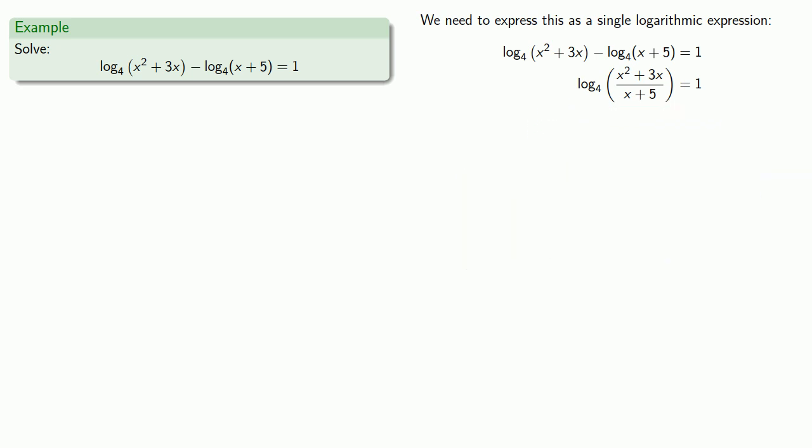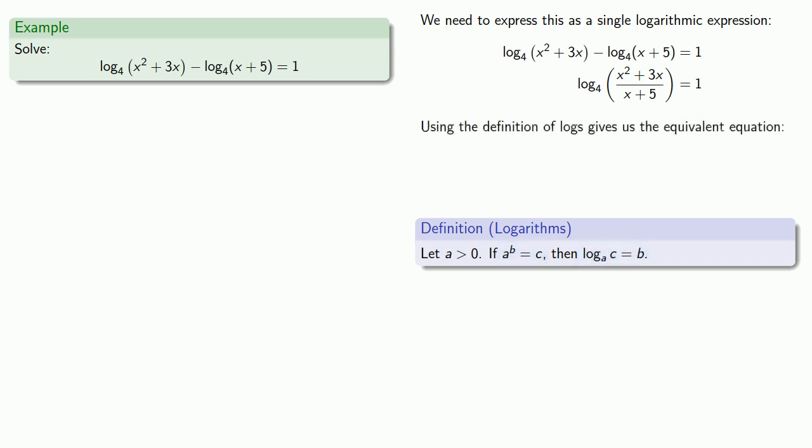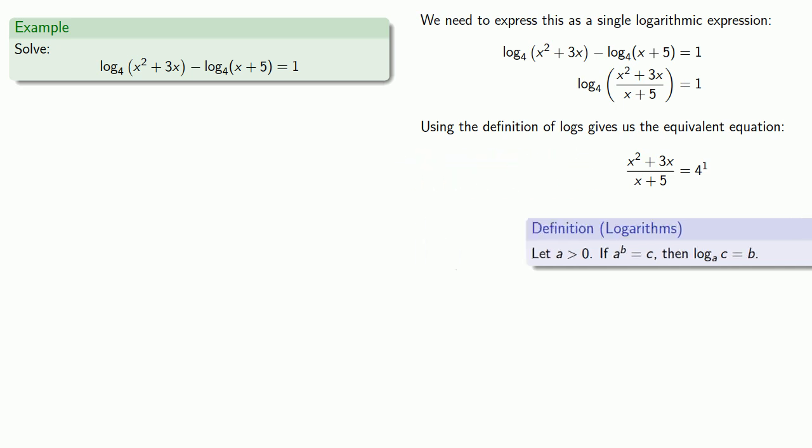Remember, definitions are the whole of mathematics, all else is commentary. Every logarithmic equation corresponds to an exponential equation, so using the definition of logs gives us the equivalent equation 4 to power 1 equals x squared plus 3x over x plus 5. We can simplify this because 4 to power 1 equals 4.